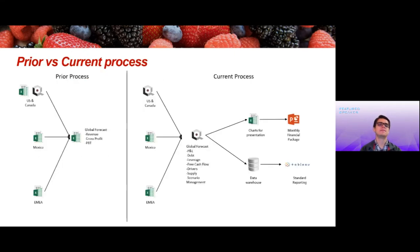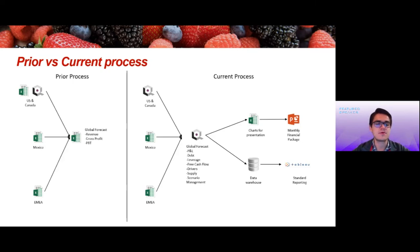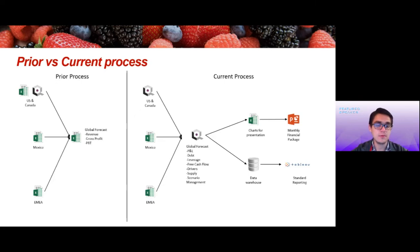We mapped the process, and this is an extremely summarized version of that process map. The previous process had different data inputs coming from both Excel and Quantrix — in the US and Canada regions we implemented Quantrix, but for Mexico, Europe, and Africa we were still getting information from Excel sheets. We then consolidated this into global reporting, but only for revenue, gross profit, and EBITDA.